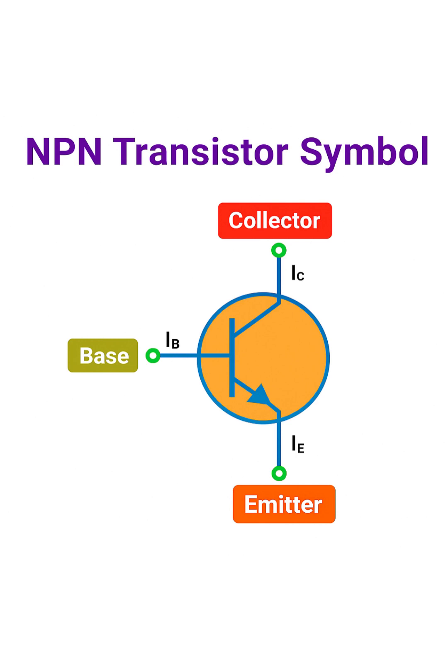Now, how do we know this is an NPN transistor and not the other type, a PNP? The secret is in the arrow on the emitter terminal. For an NPN transistor, the arrow always points away from the base and out of the emitter.